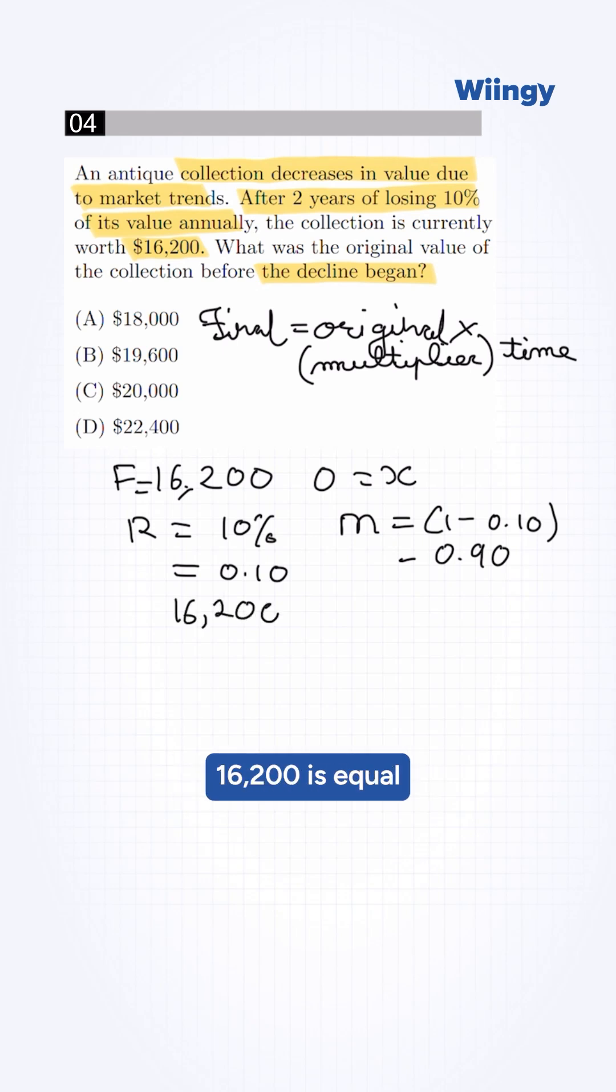this will be 16,200 equals x into 0.90 raised to 2. Simplifying,